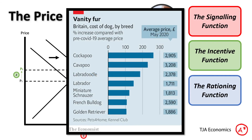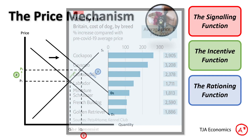Thus the price mechanism has successfully responded to an increase in demand and has successfully reallocated resources to the market. And as you can see, in May 2020 the price for a Cockapoo, for example, was 260% higher than it had been before COVID — at nearly £3,000. A Cavapoo was just over 200% more. You can see the price of puppies went up a lot in 2020. That's the market mechanism at work.